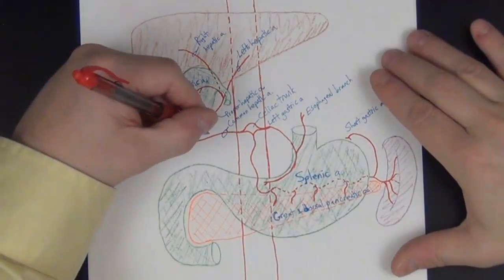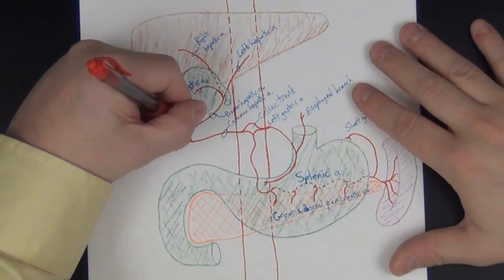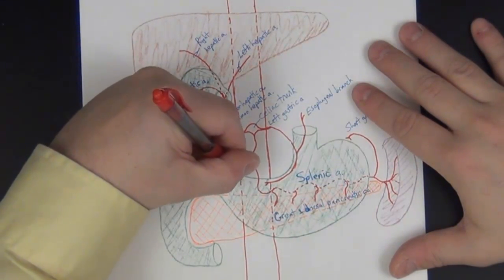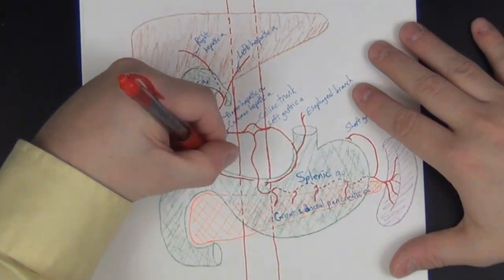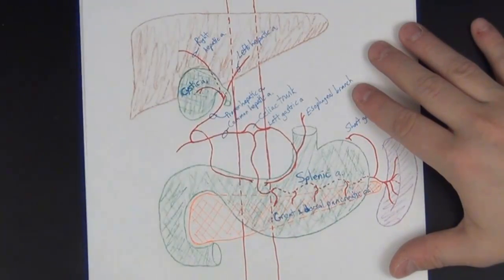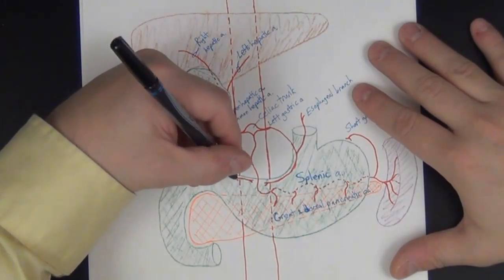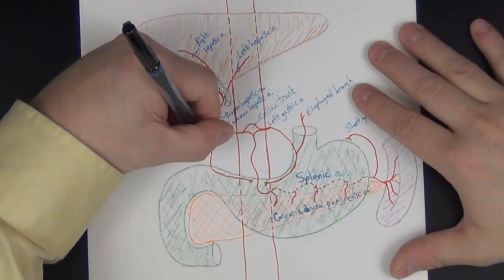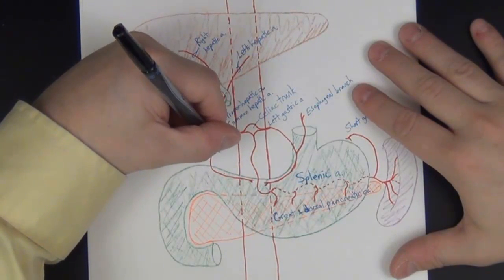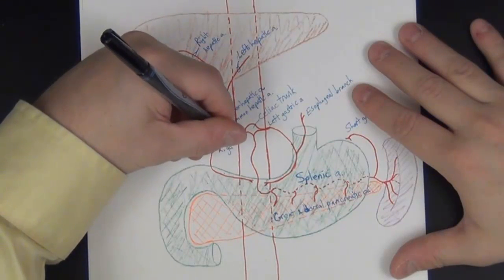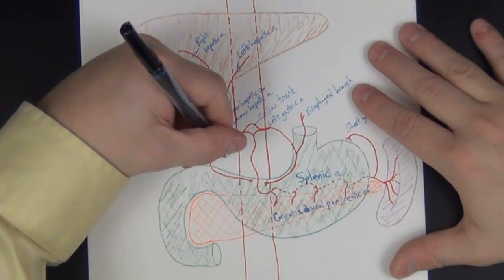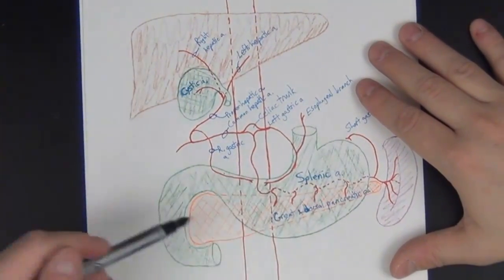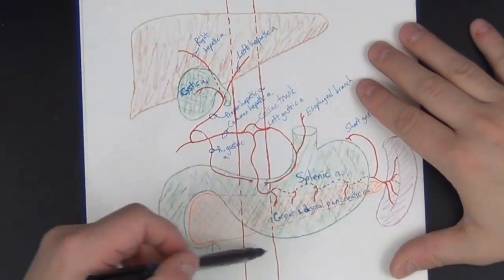One other branch of the proper hepatic does something a little unusual — it jumps off and heads down to the lesser curvature of the stomach, where it anastomoses with the left gastric artery. This is the right gastric artery. So supplying the lesser curvature we have both a left gastric and a right gastric artery.